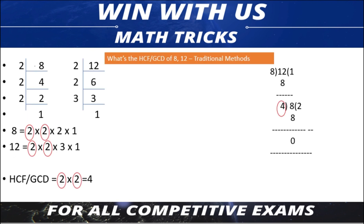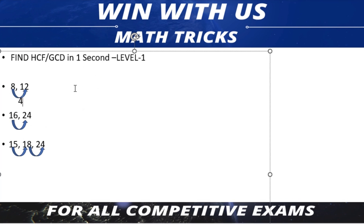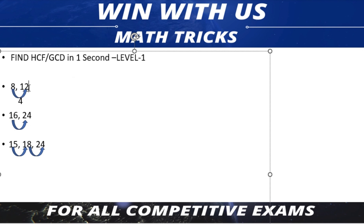So if you do it normally, you would get 10, but you don't need to do that. The difference between 8 and 12 is 4, right? When you subtract this number, you have the answer to divide by. If you do it normally, you will not have time.